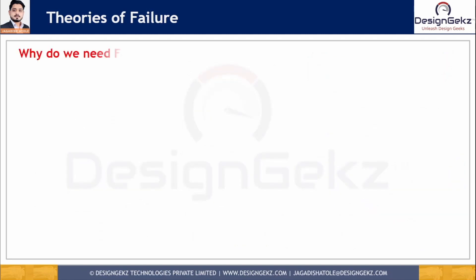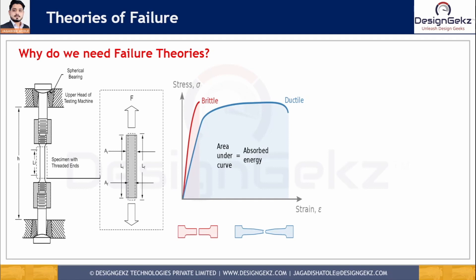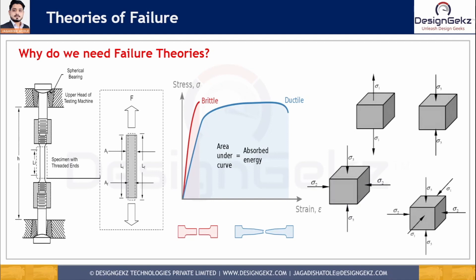Why do we need different failure theories? For ductile materials, failure is considered to occur at the onset of plastic deformation; for brittle materials, it occurs at fracture. These points are easy to define for uniaxial stress and can be plotted on a stress-strain curve. However, for a complex triaxial stress state where the object is subjected to both twisting moment and loading — combined loading conditions — predicting failure is not straightforward.